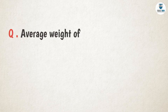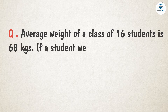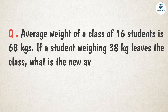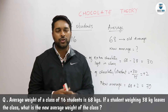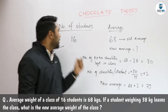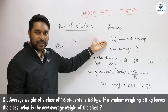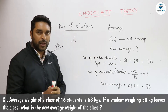Now let us move on to our next question, which says: the average weight of a class of 16 students is 68 kg. If a student weighing 38 kg leaves the class, what will be the new average weight of the class? In this question we will consider weights as chocolates. There are 16 students in the class and their average weight is 68 kg, meaning each of the 16 students has 68 chocolates with them.